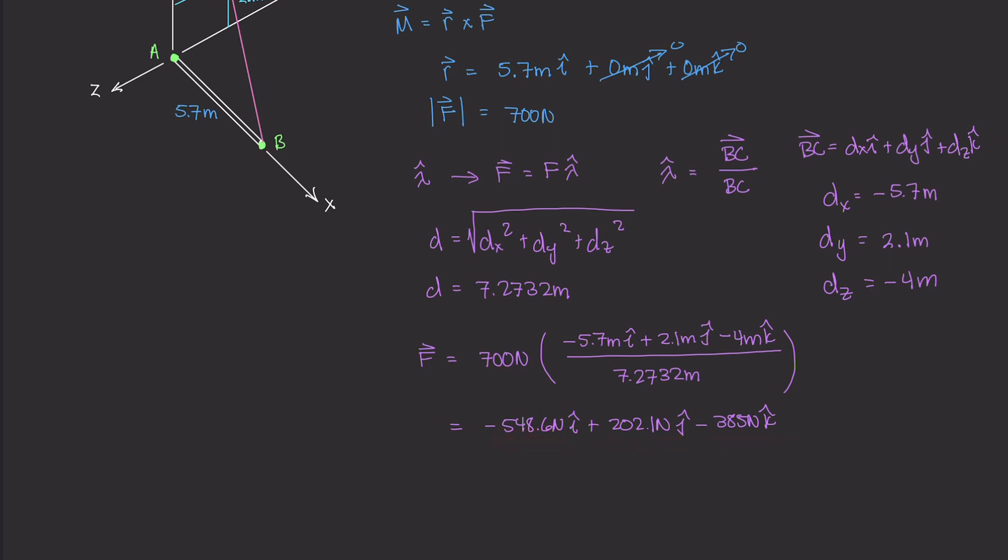So we have our F value here and we also have our R value right here. So we can plug all this into our moment equation and figure out what our moment is. We have our position vector, which only has one real component, just along the x axis. And then we have our force vector here, which we calculated. So now we can start taking the cross products. The first one I want to do is 5.7 times the x component here. Now remember, we're doing i cross i. That's just going to give us a value of zero. i cross i or any unit vector crossed with itself is just zero.